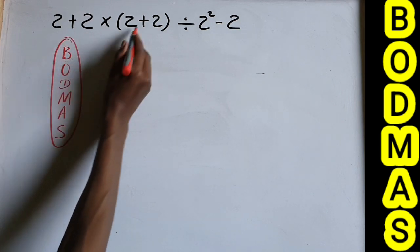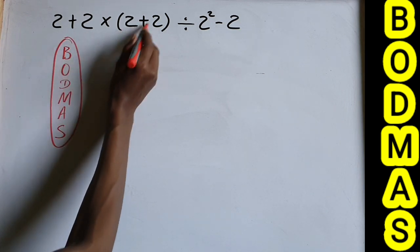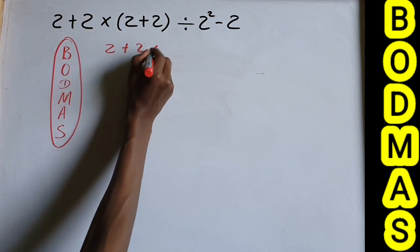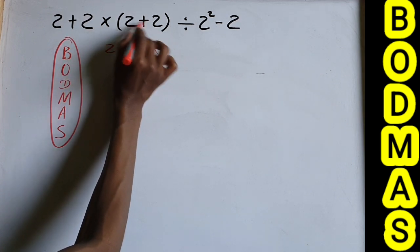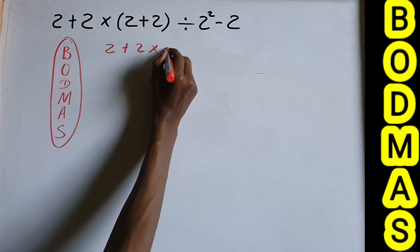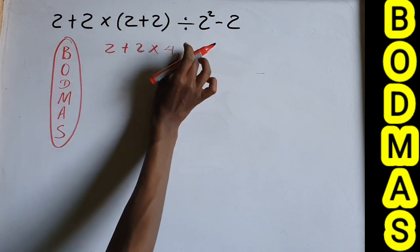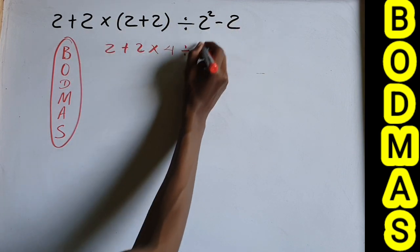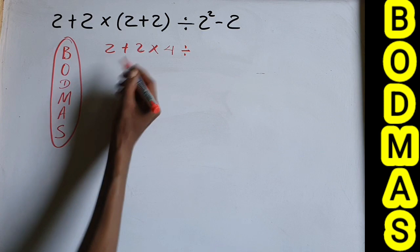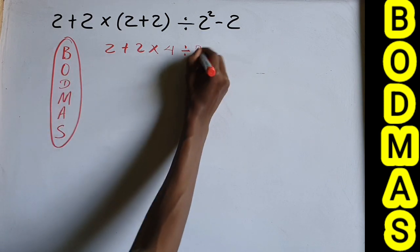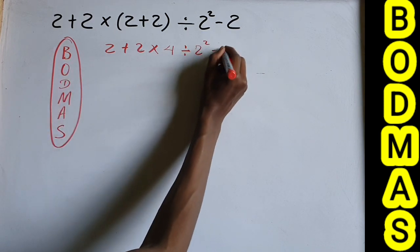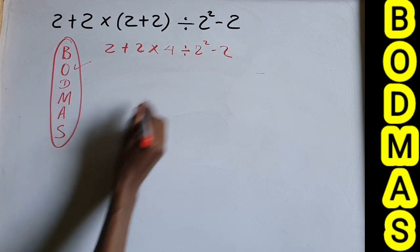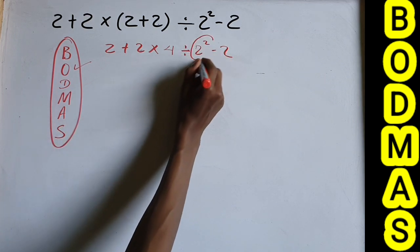Following this sequence, first we simplify the bracket: (2 + 2) equals 4. We eliminate the bracket. Then the next step is Order — we apply the power: 2 to the power of 2. So we now have 2 + 2 × 4 ÷ 2² minus 2.